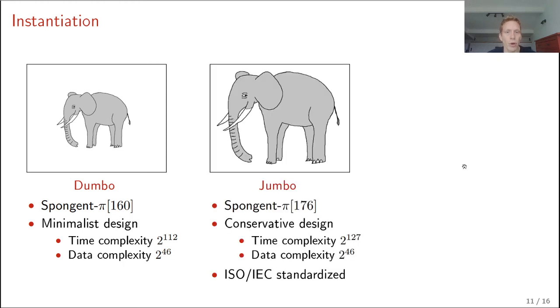And we have Jumbo, which is a bigger variant. It uses Spongent-176. It's a more conservative design. So it achieves security up to 2 to the 127 queries and a data complexity of 2 to the 46 blocks. And I would like to note that this permutation is ISO-IEC standardized.